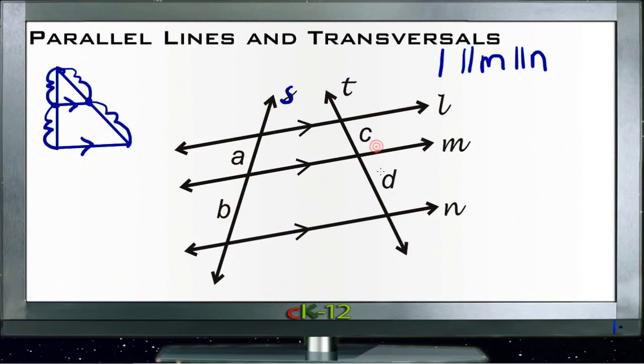But because the lines are parallel, L, M, and N are parallel. Where S and T cross those lines ends up being proportional, so A is proportional to C in the same way that B is proportional to D.